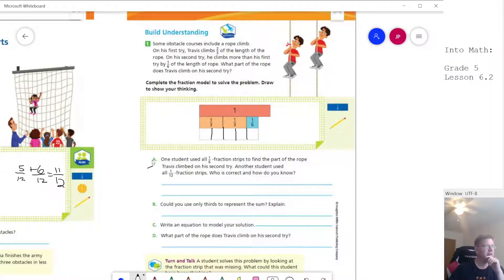It says for this part here, another student used one twelfth fraction strips. You could use that, but it's more work. But if you wanted to make 12 be the common denominator between these two fractions, it would work. We would just, again, double. We would end up with 10 twelfths for that.